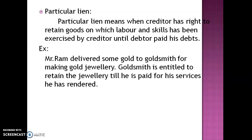Another example of particular lien is a tailor. You give your clothes to the tailor to stitch and style. The tailor applies labor and skill on your clothes. The tailor becomes the creditor and you become the debtor. When you don't pay, the tailor has the right to keep your clothes and will return them only when you make payment. This is particular lien because labor and skill were applied on those specific goods.